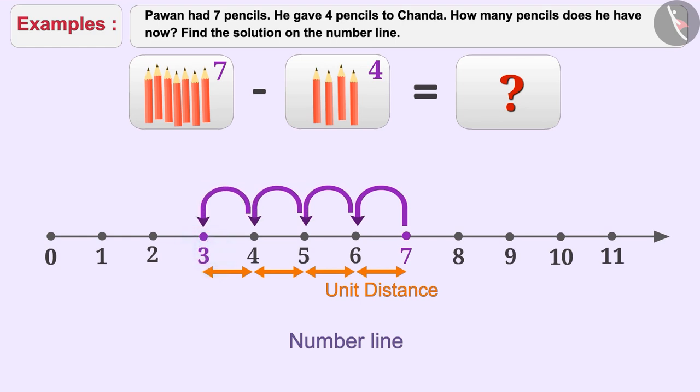After four steps, we arrive at number three. This is the answer of seven minus four. Therefore, Pawan has three pencils left with him.